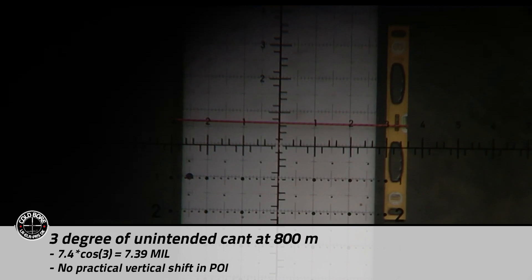800 meters is a good distance to true your BC so if you have already trued your ballistic coefficient but have not made the tall target test the result of the truing is still valid.